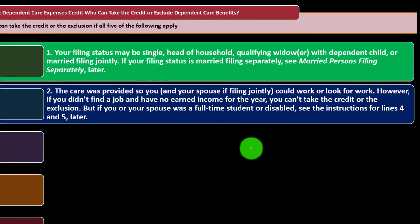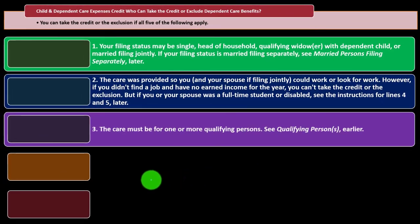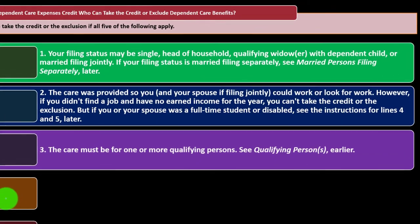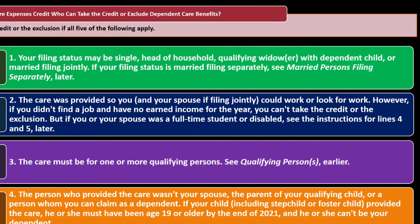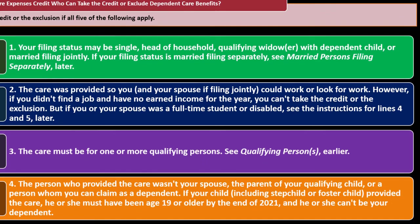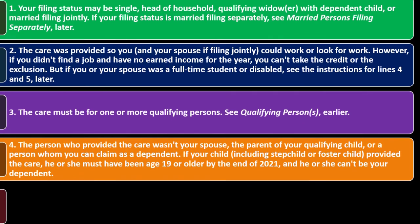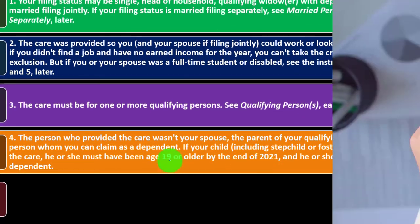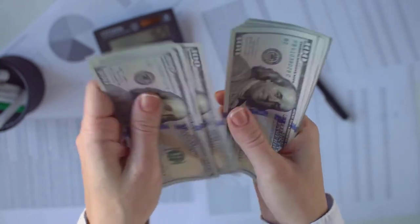Number three: the care must be for one or more qualified persons — see 'qualified persons' in the instructions. Number four: the person who provided the care was not your spouse, not the parent of your qualifying child, and not a person whom you can claim as a dependent.